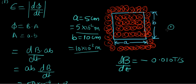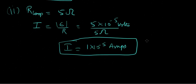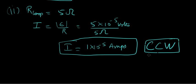If the induced magnetic field is out of the page, we use the right-hand rule to figure out the direction of current flow. We point our thumb in the direction of the magnetic field — out of the page, towards your face. If you curl your fingers around, the current goes in a counterclockwise direction through the loop. So the current direction is counterclockwise.